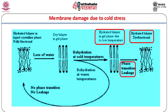Functional membranes are hydrated and in a liquid crystalline phase. On exposure to cold stress, dehydration of cells causes the membranes to go into a gel phase. On rehydration, the liquid crystalline phase is restored and the membrane becomes functional again. However, when rehydration occurs at low temperature, phase transition occurs resulting in a leaky membrane. Such cold temperature induced phase transitions affect electron transport in chloroplasts and mitochondria, causing a buildup of reduced electron transport components which generate reactive oxygen species.